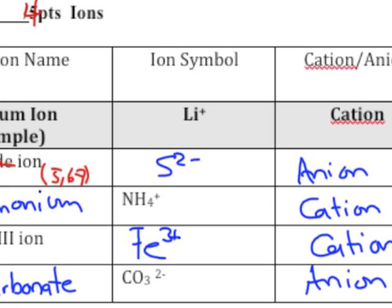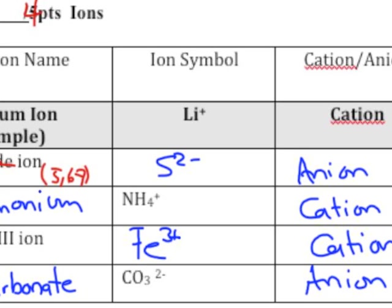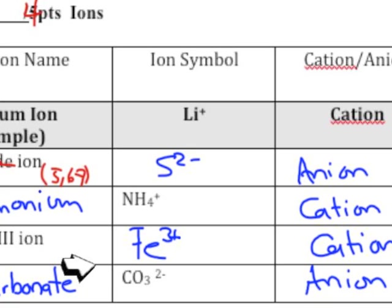For the ions section, you will get to use your periodic table and common ion sheet with heavy metals and polyatomic ions. Your challenge is knowing where to look. Lithium is in group 1A, so it's +1 — a cation. Sulfide: look in groups 5, 6, 7; sulfur is in 6A, so it's 2- — an anion. More than one element means it's a polyatomic ion — like ammonia. Roman numerals indicate a heavy metal; the roman numeral is the charge. More than one element also gives you a polyatomic ion — like carbonate.